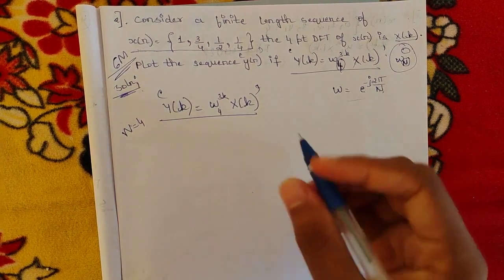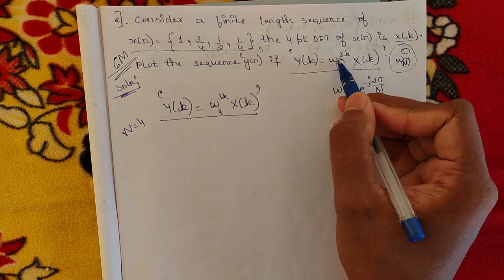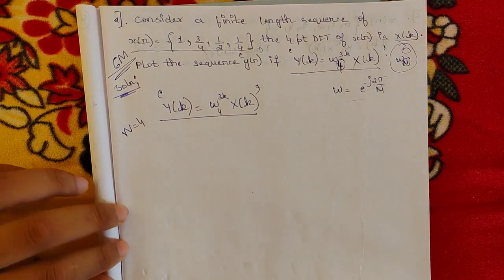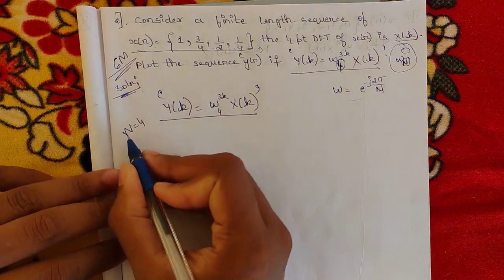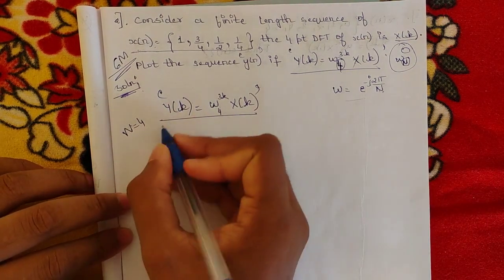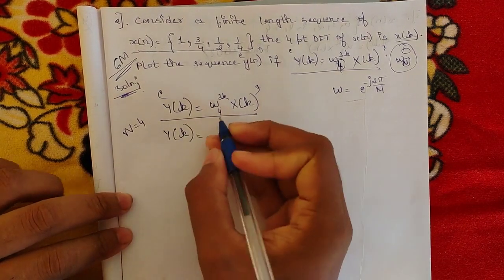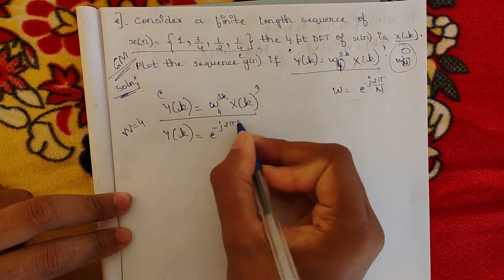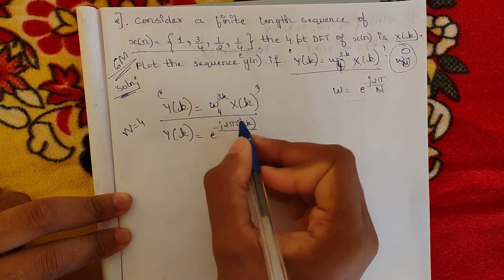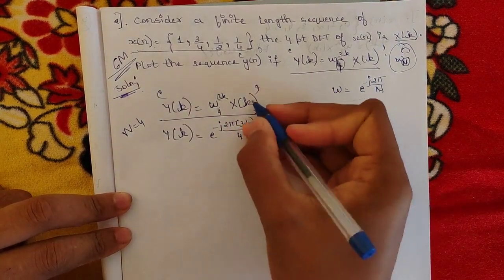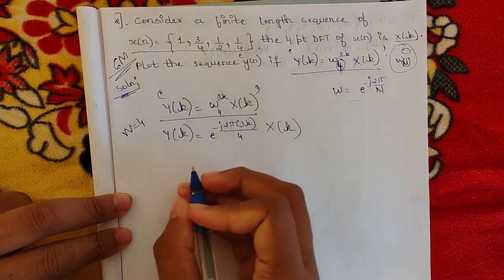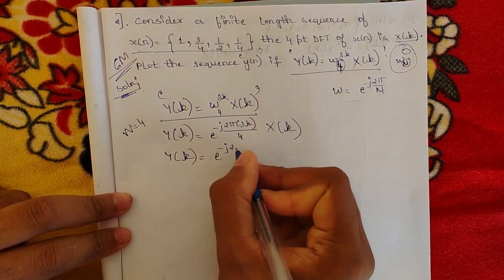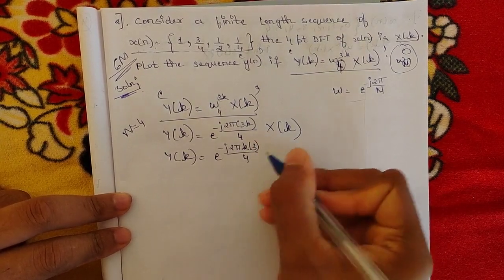In the second question, the length of the sequence is different from the base value N, and I'll show how to handle that. For this first problem, since N = 4, we substitute: y(k) = e^(−j2π·3k/4) · X(k), which we rewrite as y(k) = e^(−j2πk·3/4) · X(k).